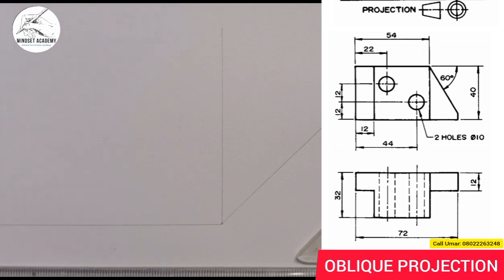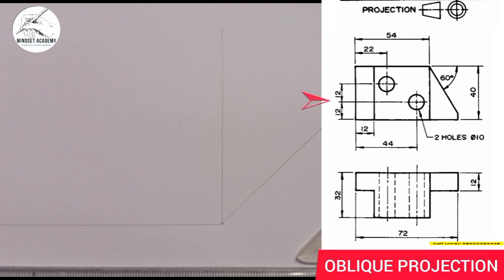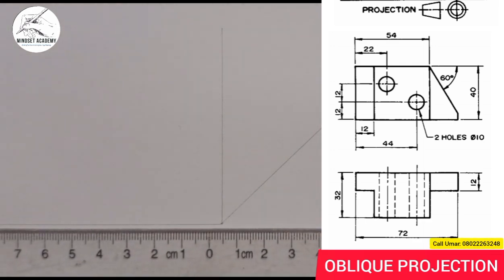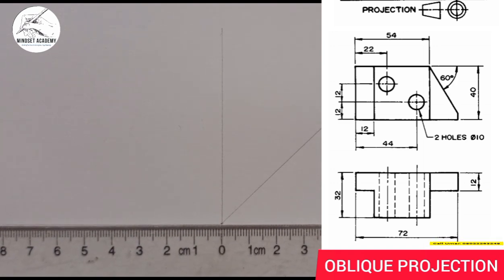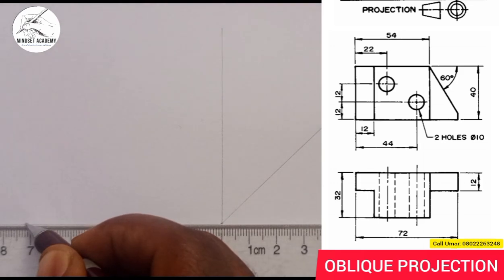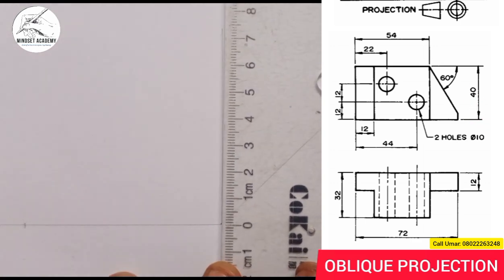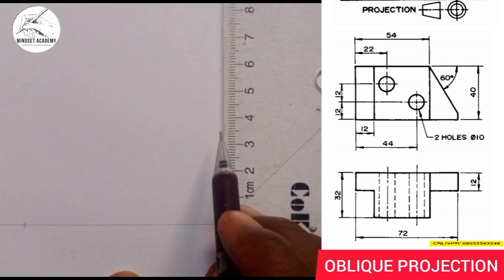If you look closely at the figure on the right-hand side, you'll discover it is in first angle projection — you can tell from the symbol displayed. Because of this, the plan is always below the front elevation. So this is the front elevation and this is the plan. The entire length is 72, so I'm going to measure 72 from this point. The height, taken from the elevation, is given as 40 — from 0 to 4 is 40.